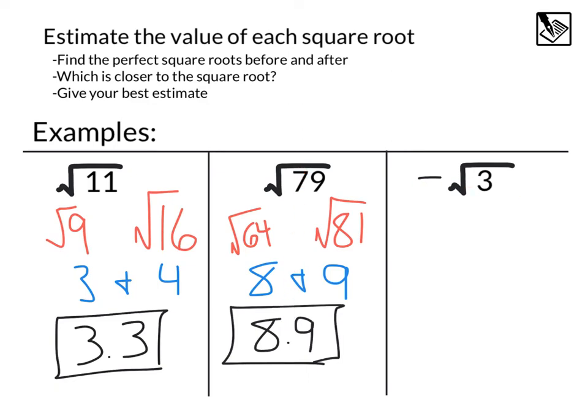Lastly, we have negative square root of 3. This is going to be in between the negative square root of 1 and negative square root of 4, which would be the integers negative 2 and negative 1. This is an interesting one. It's pretty close to both of them, but it's a little bit closer to 4.